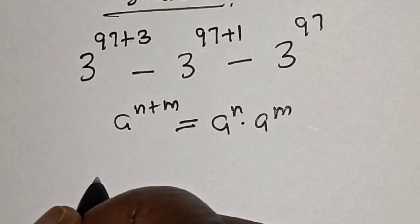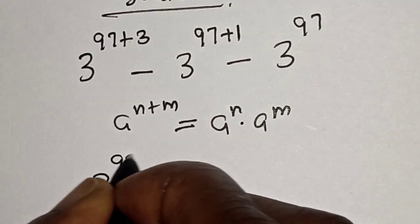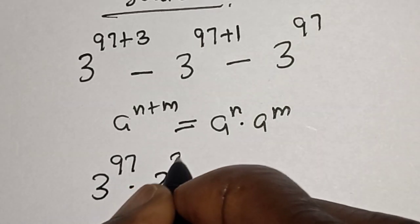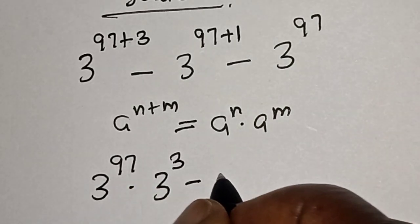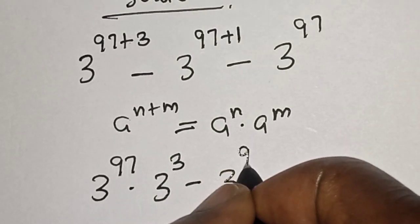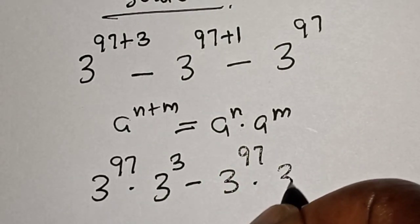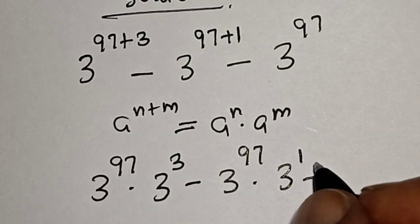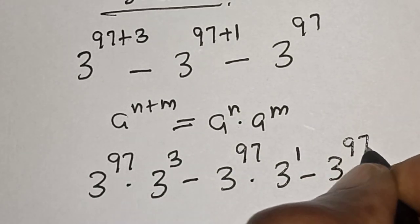And this is 3 raised to power 97 multiplied by 3 raised to power 3, minus 3 raised to power 97 multiplied by 3 raised to power 1, minus 3 raised to power 97.